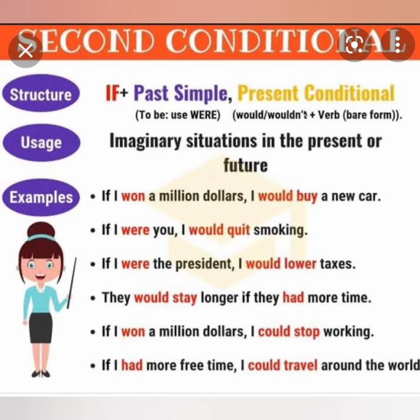The second conditional structure is: if plus past simple plus would or wouldn't plus base form. This is for fully imaginary situations. 'If I were a bird, I would fly.' 'If I won a million dollars...' — you see, that itself is imaginary — 'I would buy a new car.' 'If I were you, I would quit smoking.' Nobody can be someone else, so it is an imaginary condition.